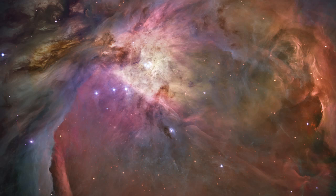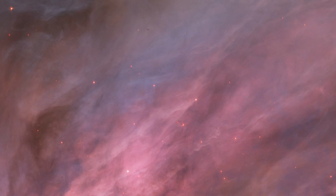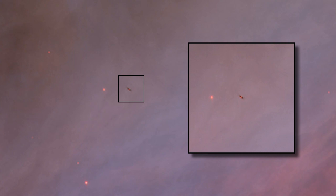Around many of the new stars are also proplids. The easiest ones to see are those in silhouette against the glowing background of the nebula.